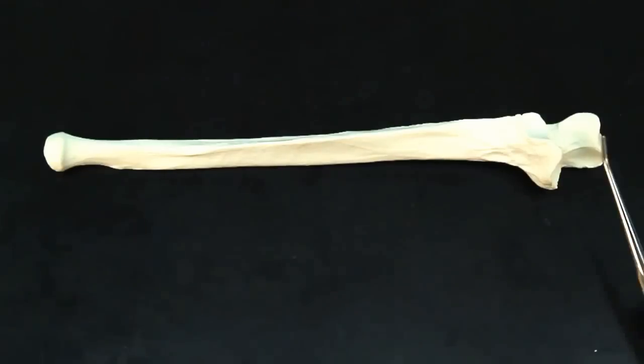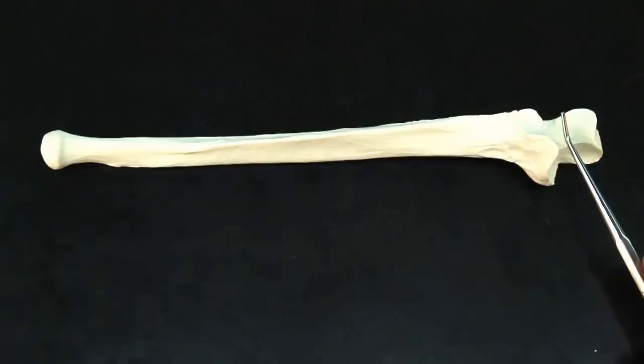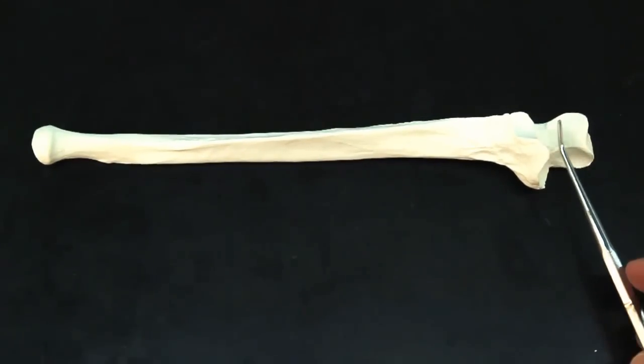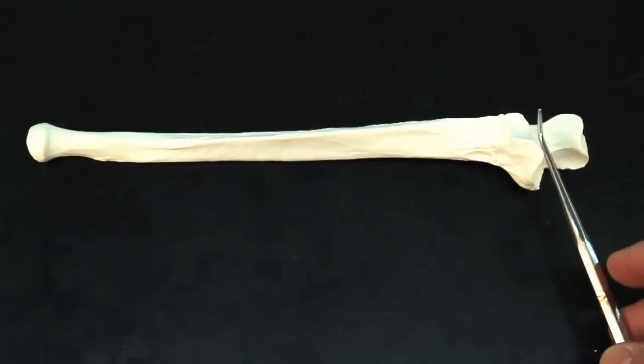And right in between this indent, or where the actual U is, this indent is going to be the trochlear notch. The trochlear notch.